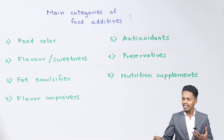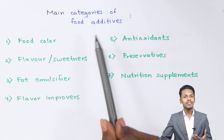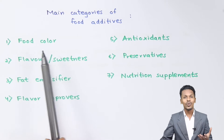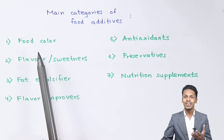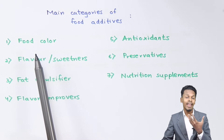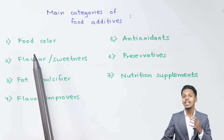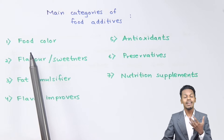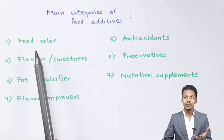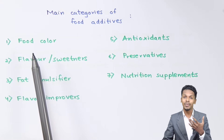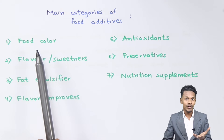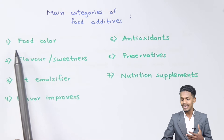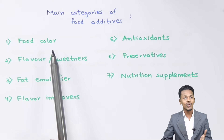The main categories of food additives are: first, food color. We understand that to enhance the look of the food we add color to it. That color could be natural, or it could be an artificial food color.